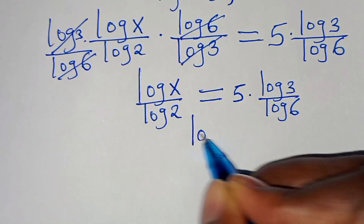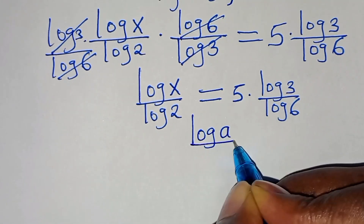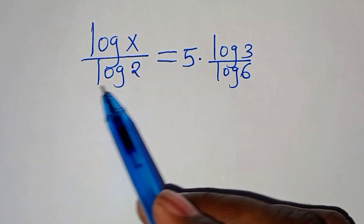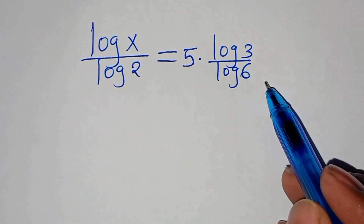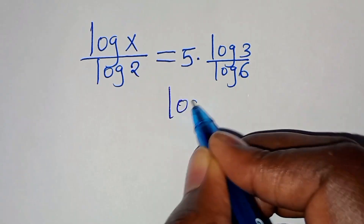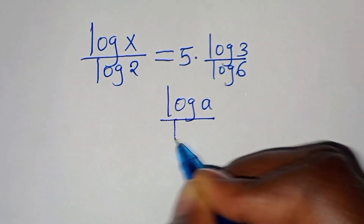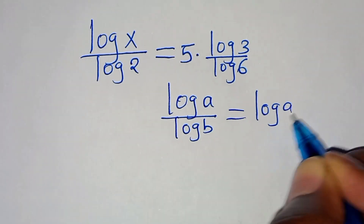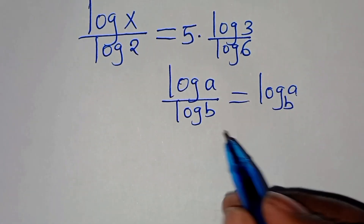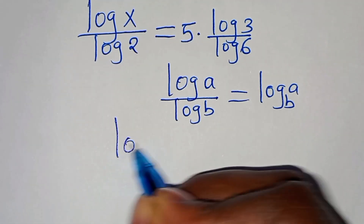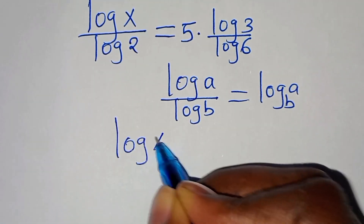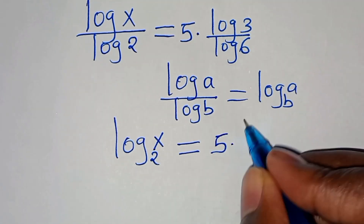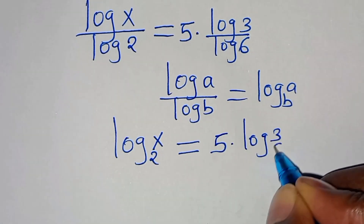We have log x over log 2 and log 3 over log 6. These are in the form of log a divided by log b, which we can express as log base b of a. Applying this property, we get log base 2 of x equals 5 times log base 6 of 3.